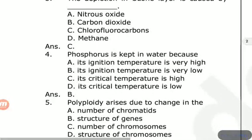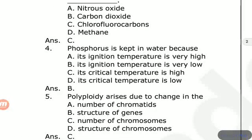Next question, fifth question: polyploidy arises due to change in the dash. Options are: number of chromatids, structure of genes, number of chromosomes, structure of chromosomes. Polyploidy is the condition involving a change in the number of chromosomes.